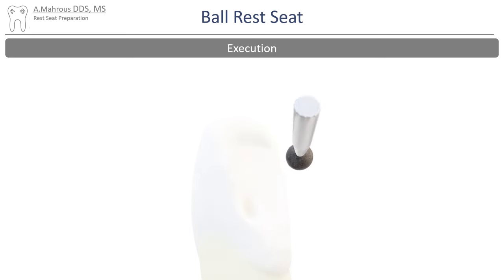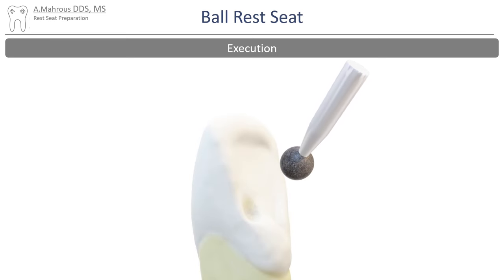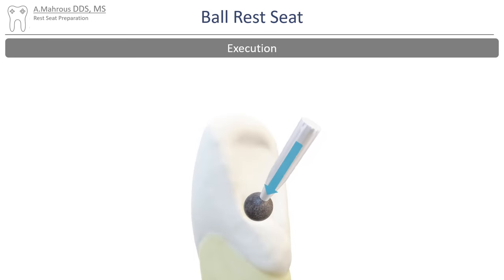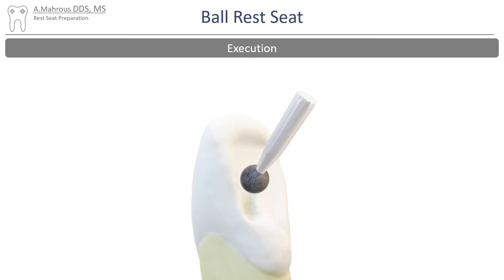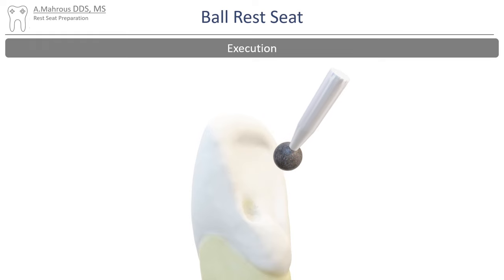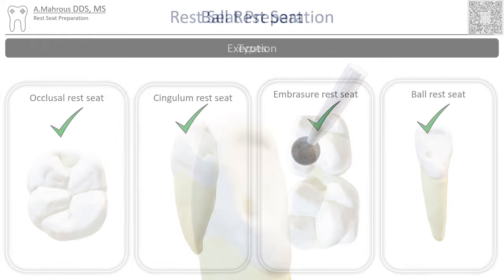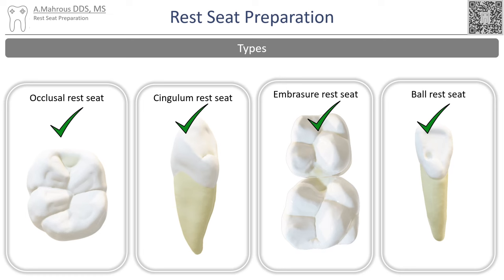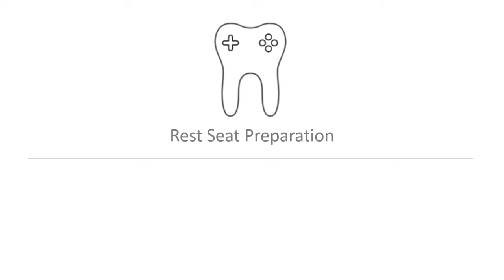Ball rest seat preparations can be prepared using a number six round diamond. The diamond is moved into the enamel of the marginal ridge to achieve the necessary depth, which is only 1 to 1.5 millimeters. The diamond is then moved in an incisal direction to remove any possible undercuts. Finally, any sharp edges or margins should be rounded. With that, we've completed all the current rest seats — we hope this video was helpful and we'll see you in the next one.